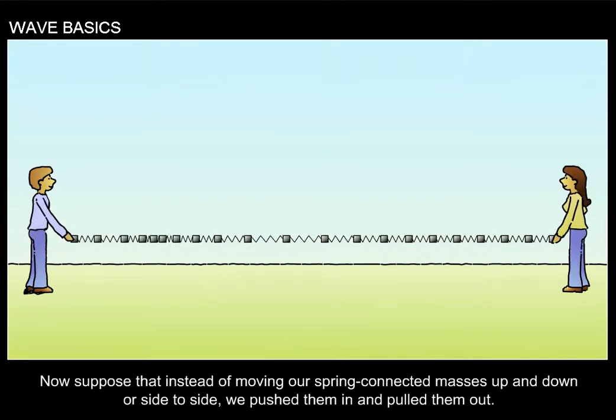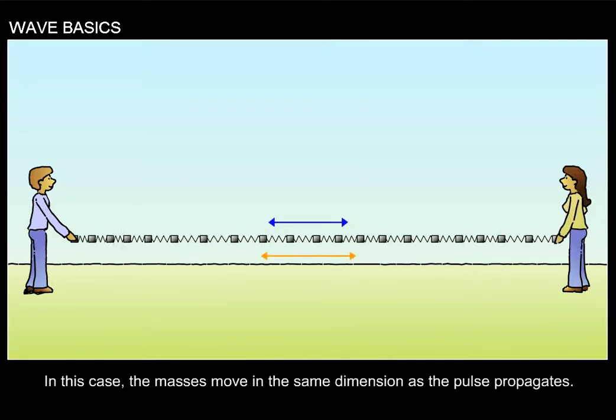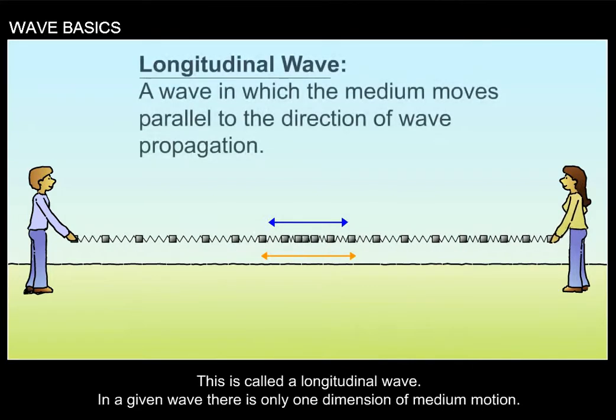Now suppose that instead of moving our spring connected masses up and down or side to side, we push them in and pull them out. Each mass would move slightly forward and then back. In this case, the masses move in the same dimension as the pulse propagates. This is called a longitudinal wave.